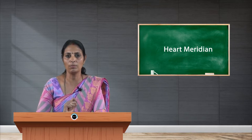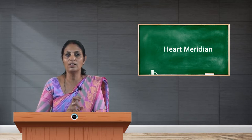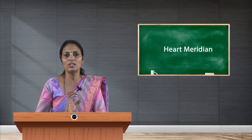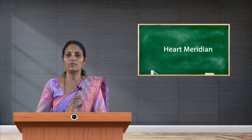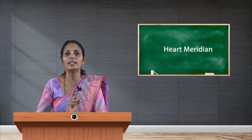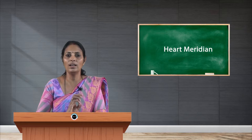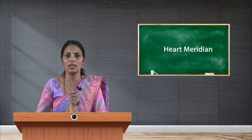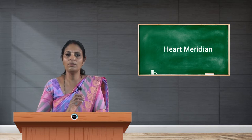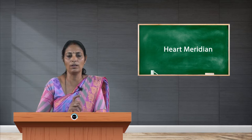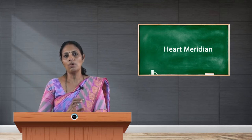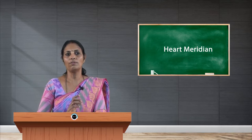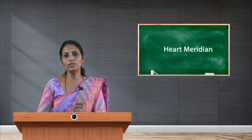The number of points the heart meridian possesses is nine. It starts from the center of the axilla and ends at the fingertip. Hence the direction of energy flow is centrifugal, since it starts from the center and ends in the periphery.